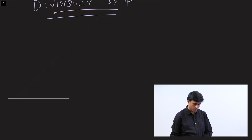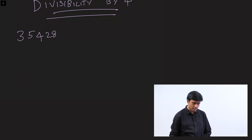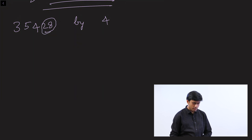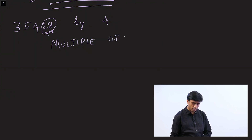Let's start with the divisibility test for 4. Let's take an example: 35,428. Is this number divisible by 4? To see if a number is divisible by 4, you have to check the last two digits — that is the ones place and the tens place. If the last two digits is a multiple of 4 or double zero,